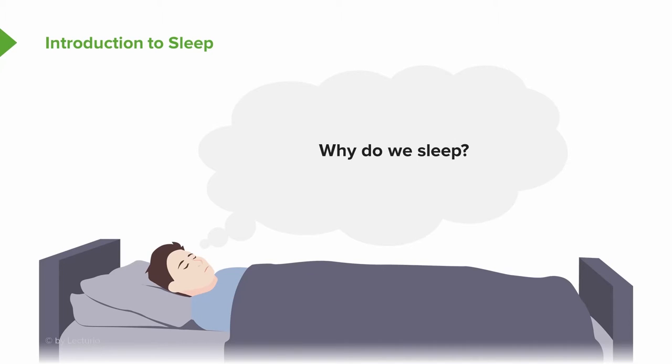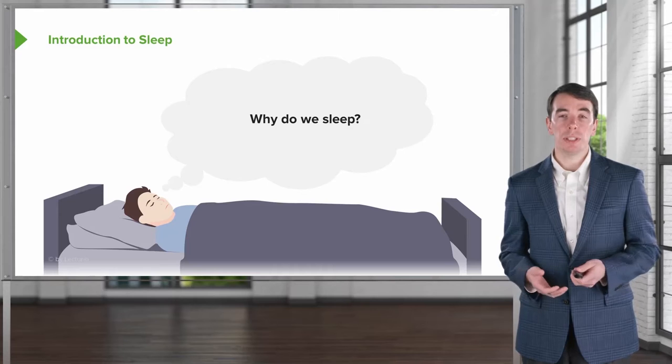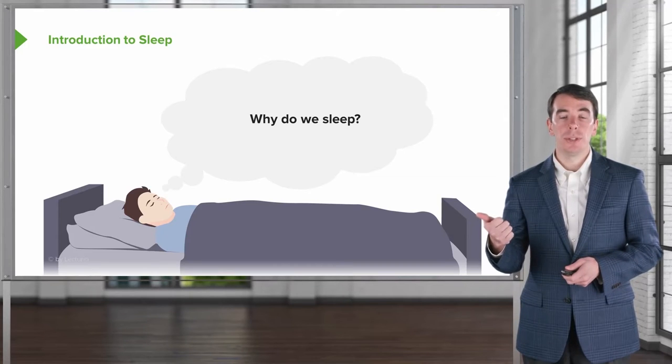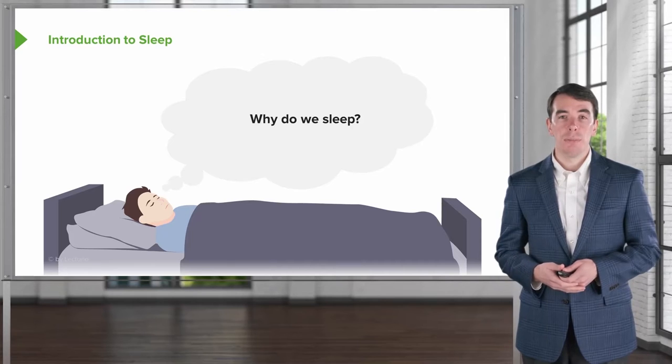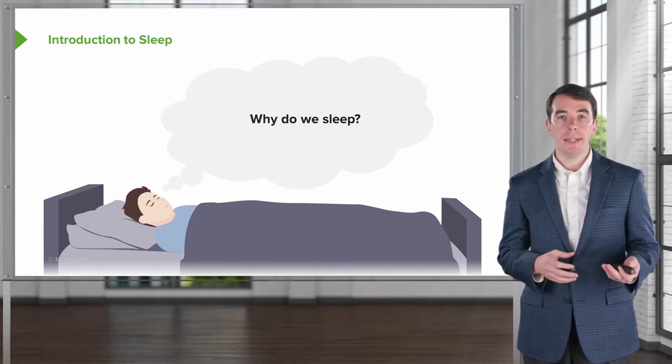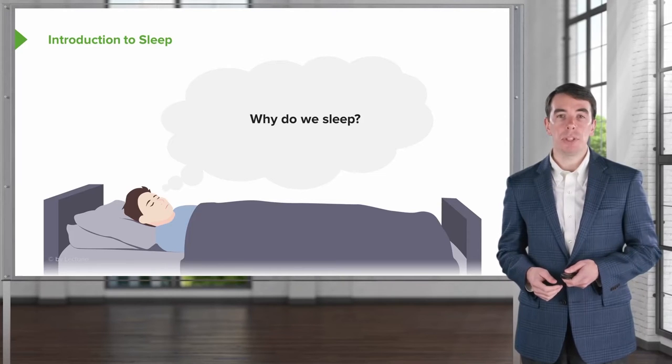Why do we sleep? Well, the truth is we don't really know. We know if we impair sleep, there's abnormalities in temperature regulation, problems with memory and cognition, and altered homeostasis. So presumably, sleep is important in managing temperature, memory, cognition, and body homeostasis. But we really don't know all of the aspects of why we sleep and the important features.